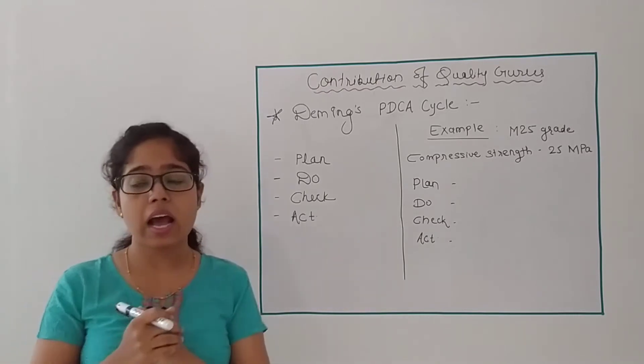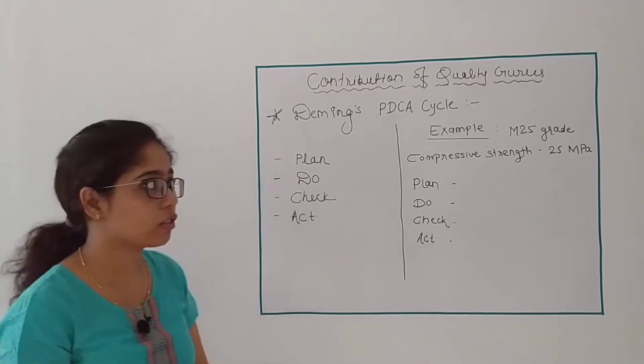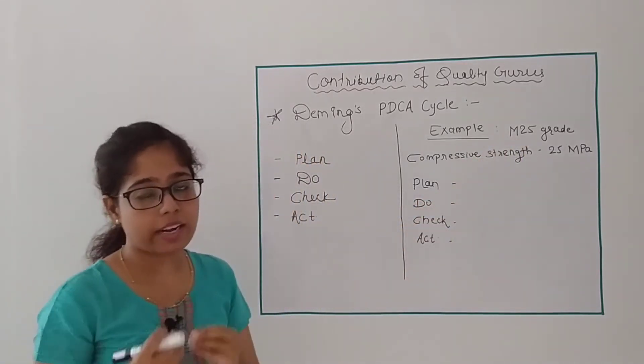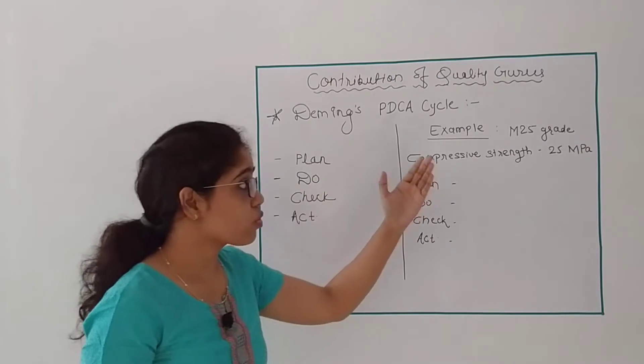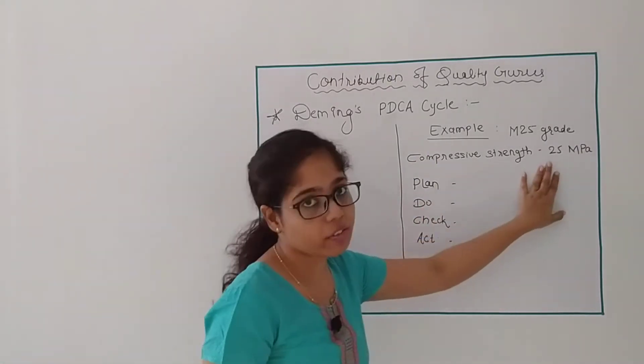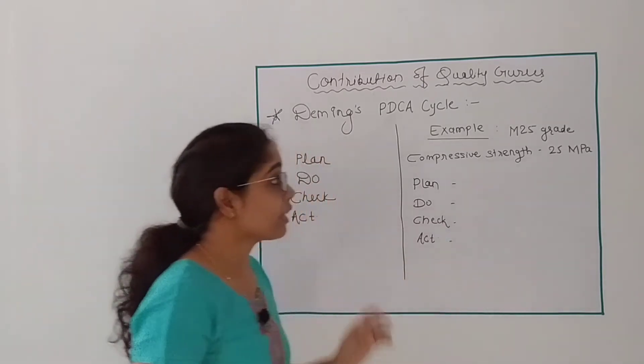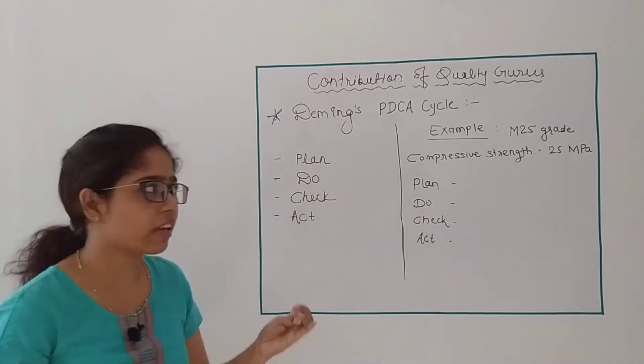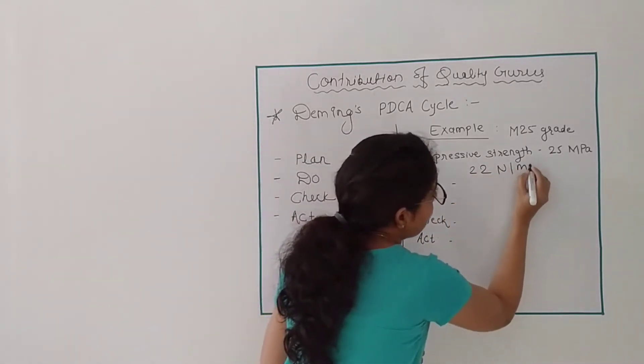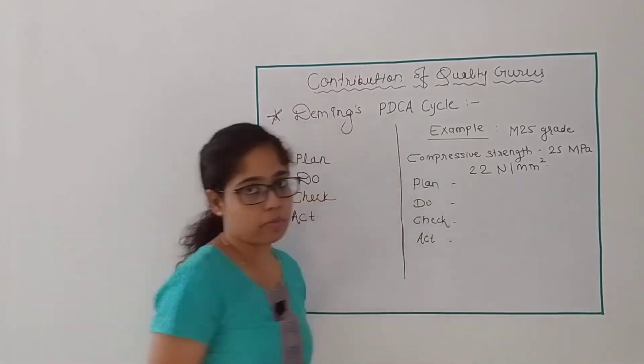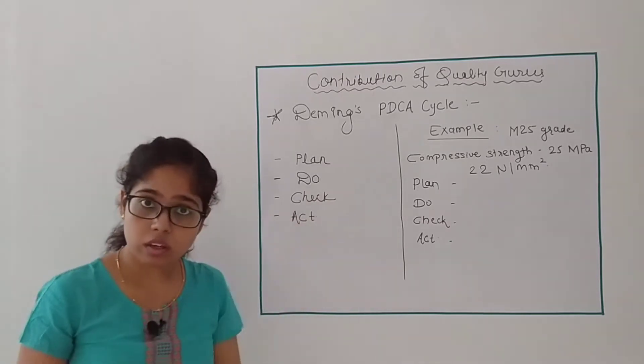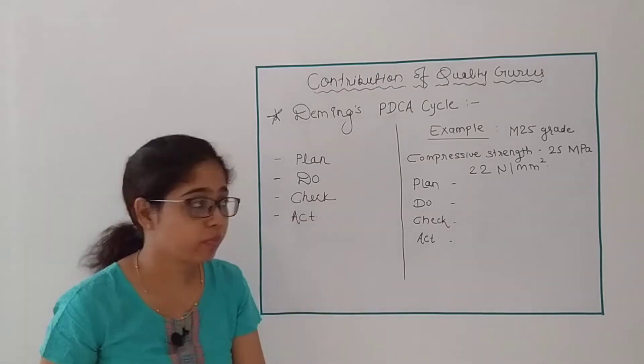Suppose I am creating one concrete batch that is of grade M25. Now as per rules or as per standards, the compressive strength of M25 grade at 28 days will be 25 N per mm square. That is the standard value. For some reason, suppose that I have the compressive strength at 28 days as 22 N per mm square. Now I want to implement this PDCA cycle to get good quality product.